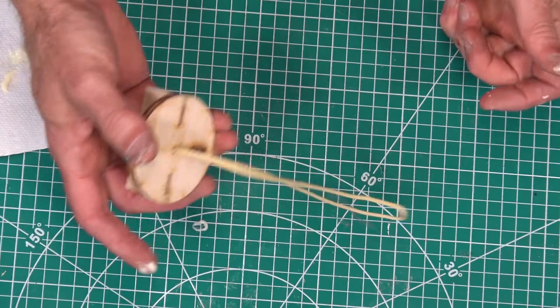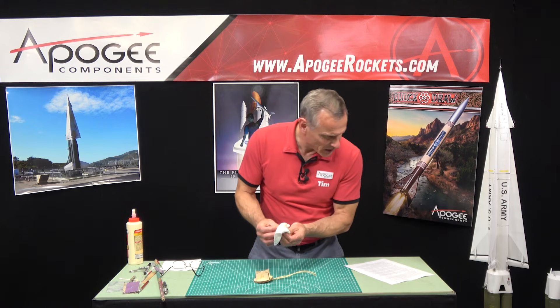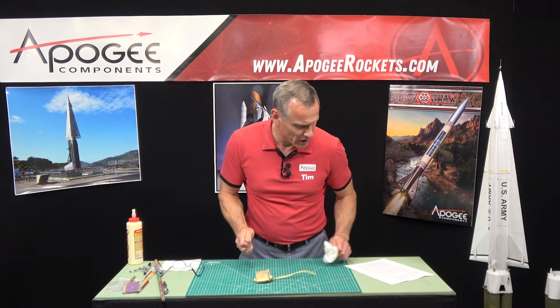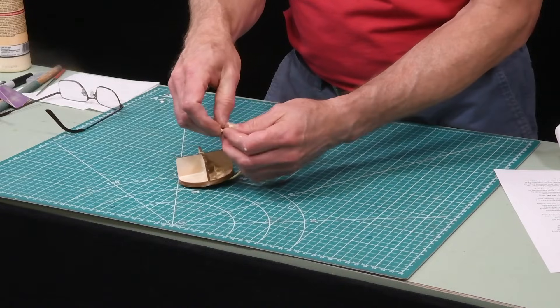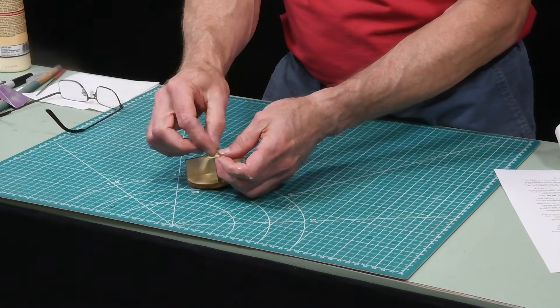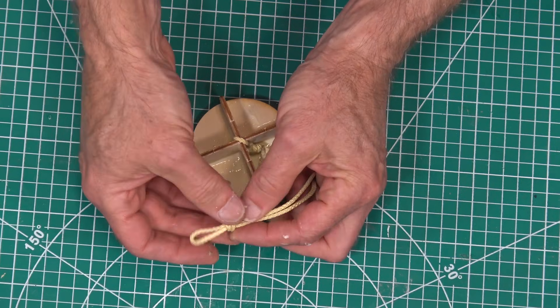We're going to let this dry. We're at step 105. It says to tie a small loop, one inch, in the end of the Kevlar and set the bulkhead assembly to dry. We're going to take this and just do an overhand knot. We want this loop to be about an inch long.